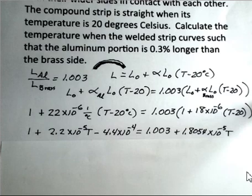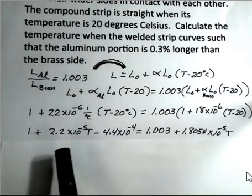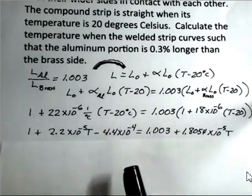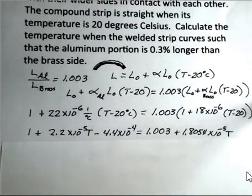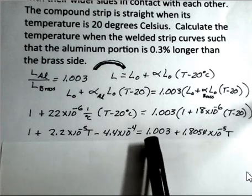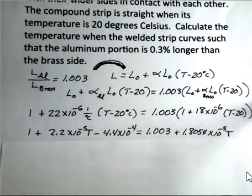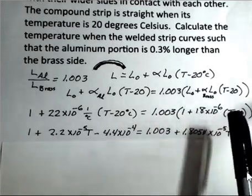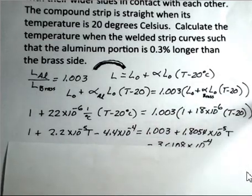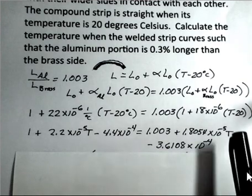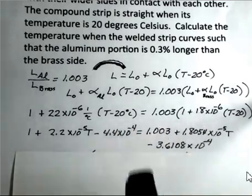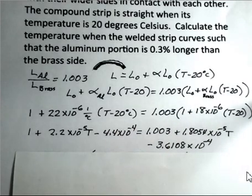So let's go a little further here. If I distribute through the parentheses, 22 times 10 to the minus 6 times T, the 22 times 10 to the minus 6 times minus 20 gives us a term, minus 4.4 times 10 to the minus 4. Distribute through the 1.003, and again, distributing 1.003, the 18 times 10 to the minus 6, and the T. And then, of course, I have another term for this minus 20 multiplied by the 18 times 10 to the minus 6 times 1.003. So you should pause and look over this work.